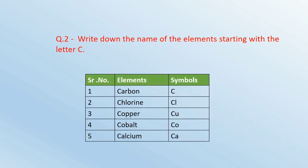Question number 2: Write down the name of elements starting with the letter C. And the answer is Carbon having symbol C, Chlorine having symbol Cl, Copper having symbol Cu, Cobalt having symbol Co, and Calcium having symbol Ca.